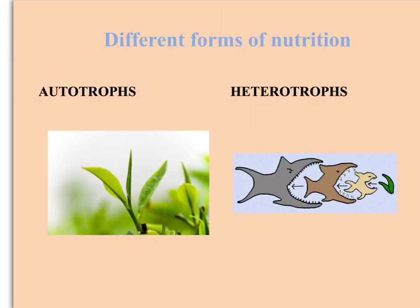Autotrophs are basically plants that make their own food by photosynthesis. What they do is to take in inorganic carbon dioxide — it's inorganic because it has no hydrogen, it's not a hydrocarbon — and they convert it into complex organic molecules like glucose. So this is the process of photosynthesis which you'll remember.